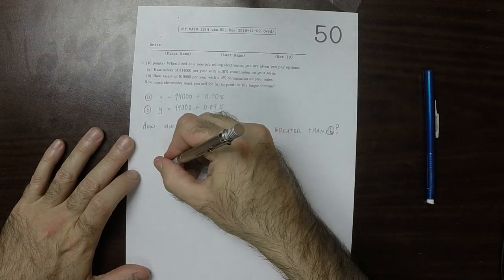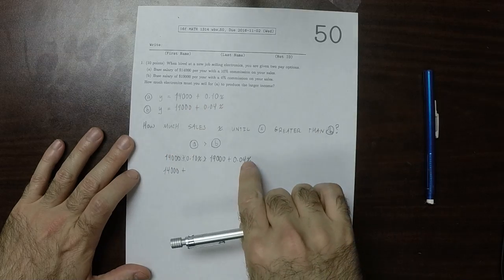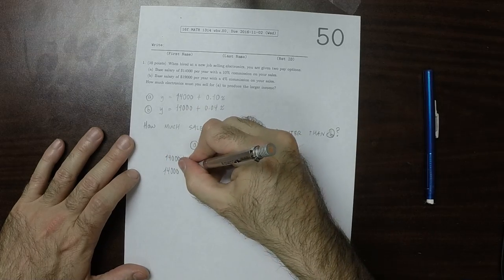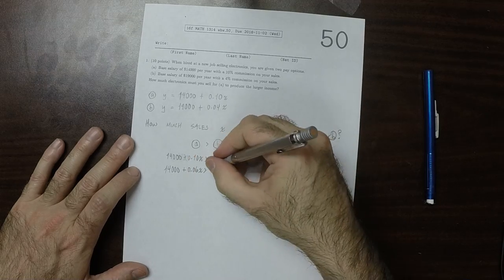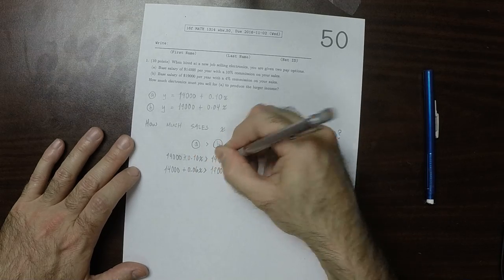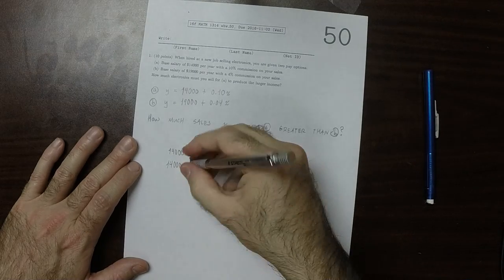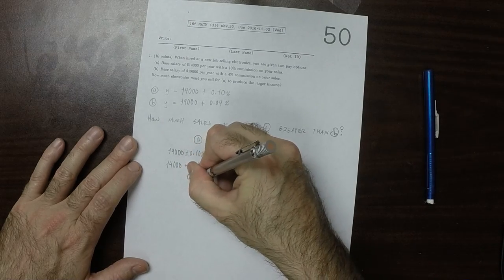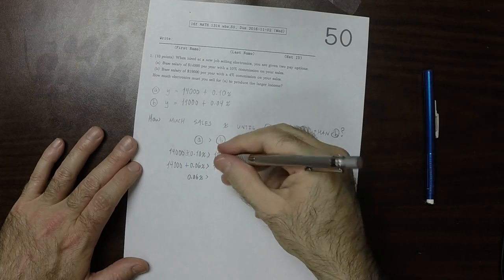We'll get all of the x's on one side, so 0.06x greater than 19,000. And then get the x's by themselves, so 0.06x greater than 5,000.